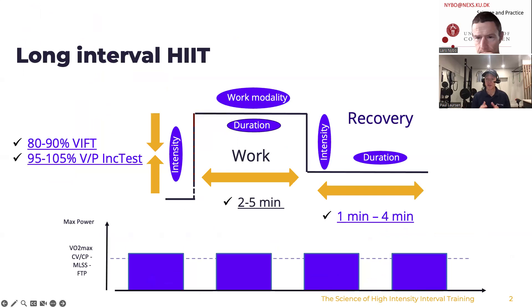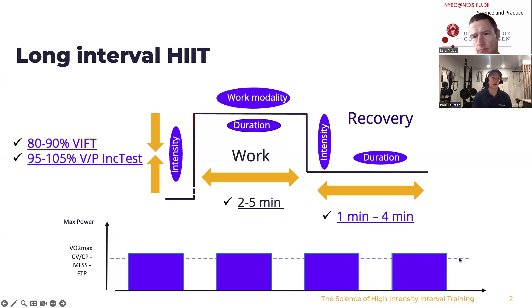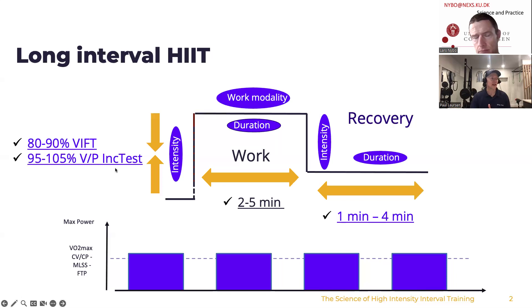Lars wanted me to start by explaining the difference between short and long intervals. The long interval — two to five minutes of work — is classified as HIIT when we're above VT2, the second lactate turnpoint. Specifically you're sitting around the power output or running speed achieved at the end of an incremental test. Two to five minutes of work intervals followed by one to four minutes of recovery, which can be active or passive.